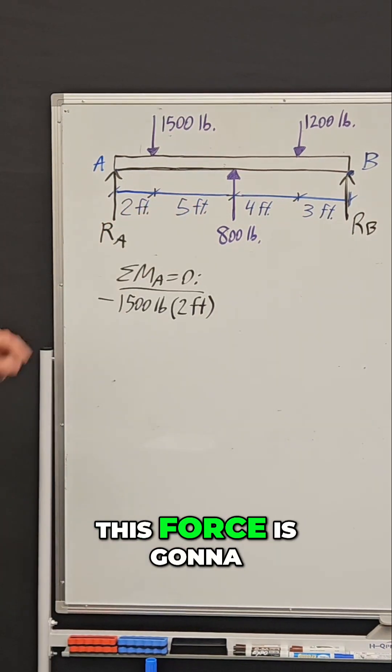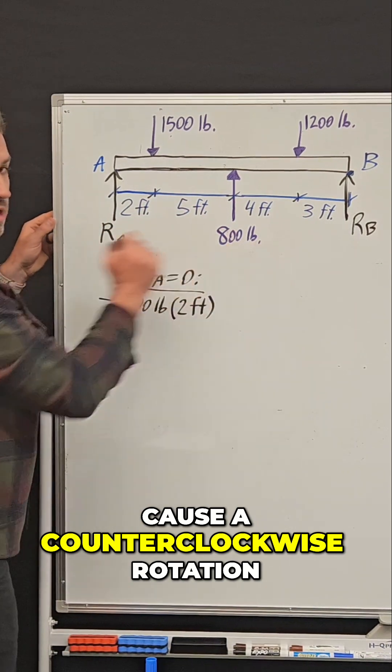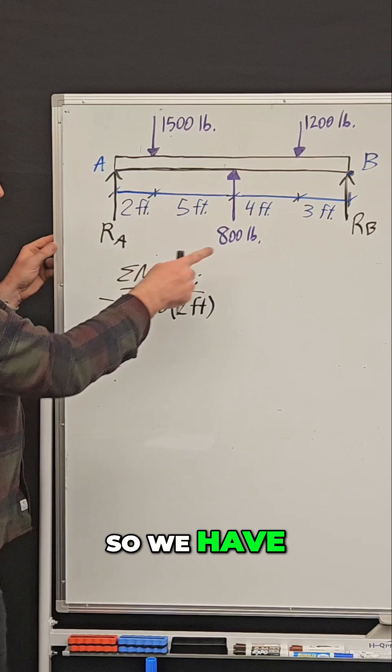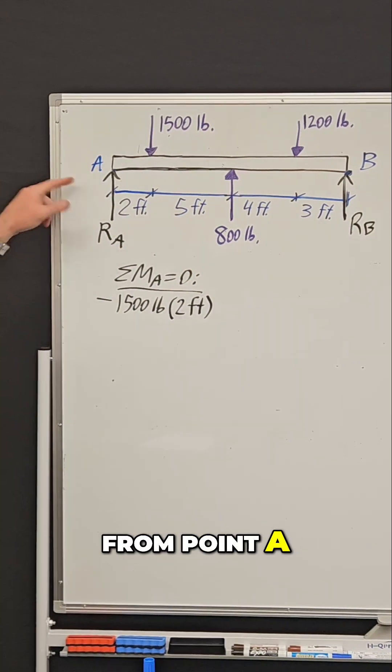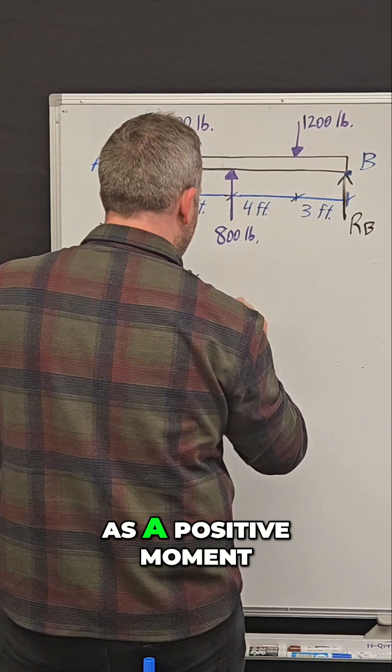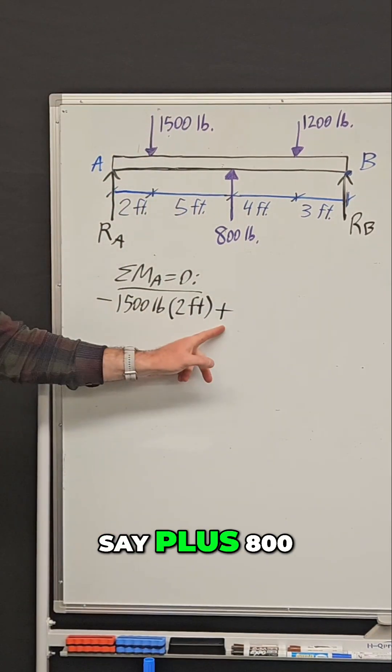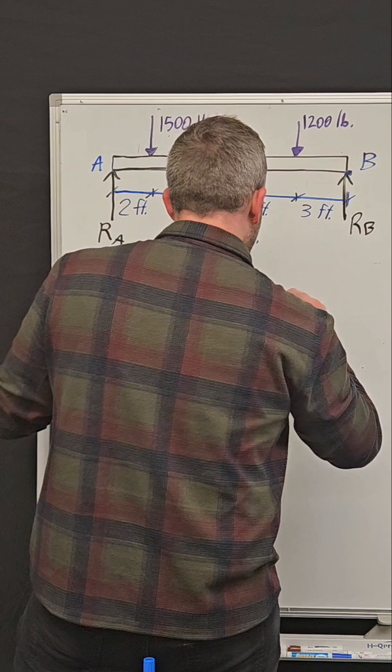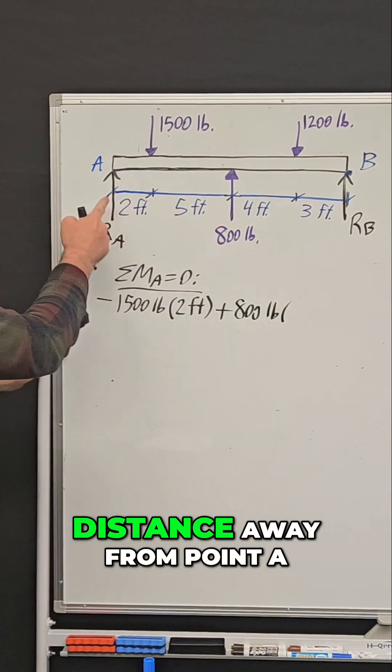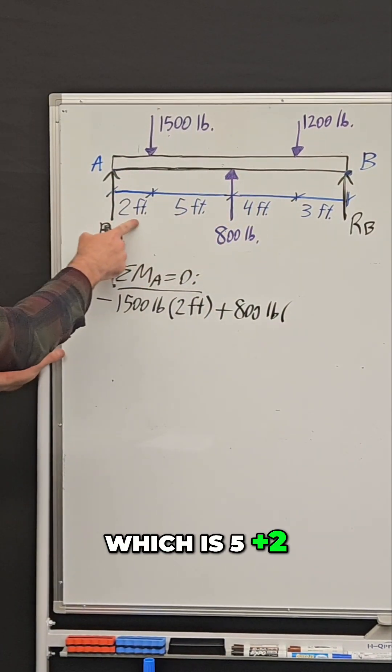Now, this force is going to cause a counterclockwise rotation. So we have an 800-pound force that's 7 feet away from point A. We define counterclockwise as a positive moment, so I'm going to say plus 800 pounds times its distance away from point A, which is 5 plus 2, 7 feet.